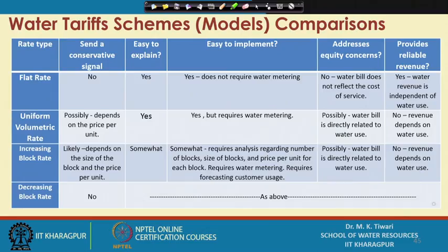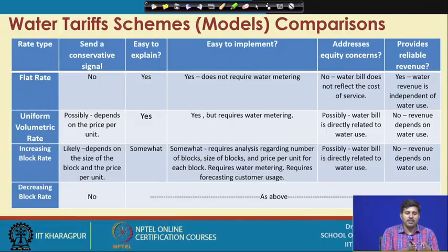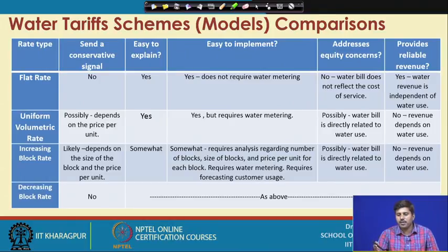In this last lecture of the week, we have been talking about the different water tariff structures. This is a comprehensive summary of the major ones: the flat rate, uniform volumetric rate (IBR), increasing block rate (IBT), and decreasing block rate (DBT) — and how they compare in terms of conservation signals, ease of implementation, equality concerns, and reliable revenues.